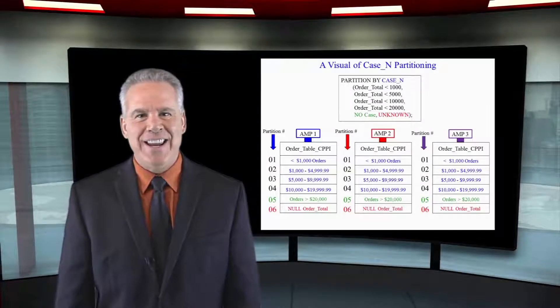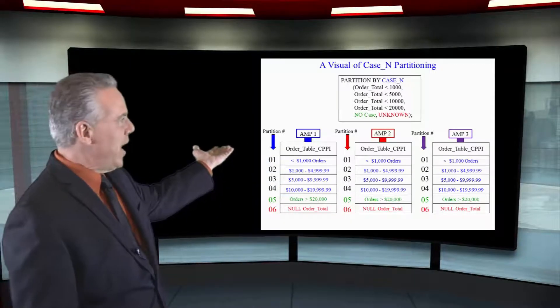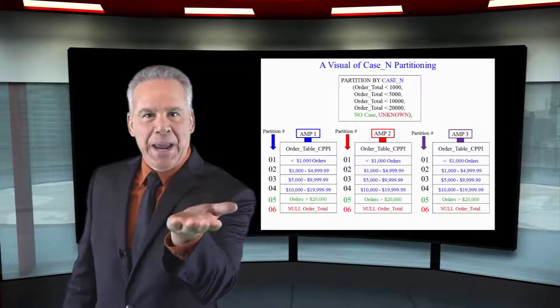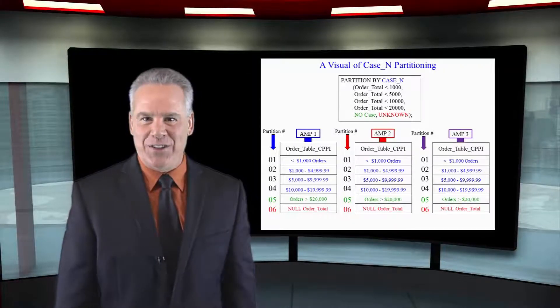Here's how that data is going to lay out. Right here you can see each amp holds their orders based on their order number hash — that was the primary index. But we partition by a CASE on order total, and now things will be sorted that way. Just remember: when they say partition, you say amps sort this way. And that's what you need to know about partitioning.